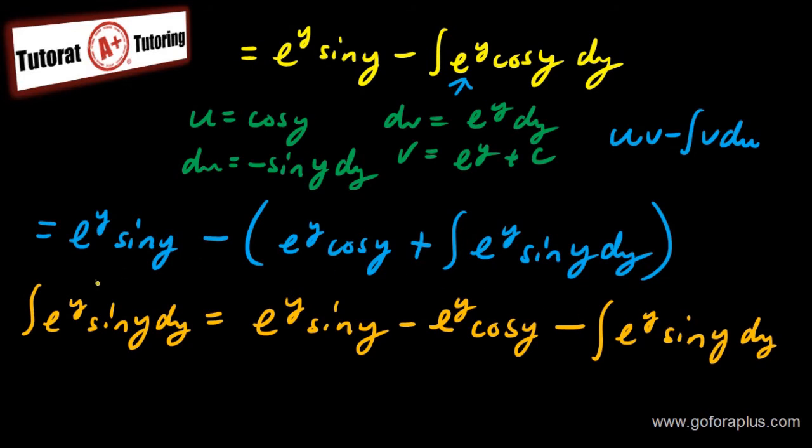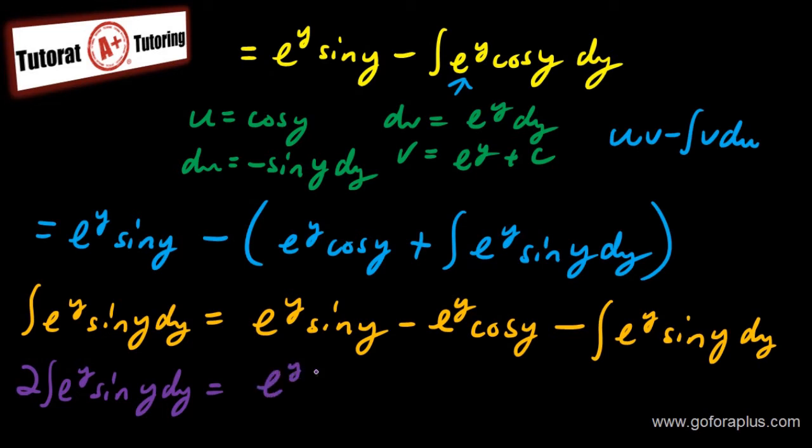Now I can group this term onto the other side to give you two times of that. So two times of integral of e to the y sine of y dy equals e to the y sine of y minus e to the y cos of y plus c. So now I introduce the plus c. So I don't forget about that. Now I know that I have to divide by two so that I can figure out what is the answer for the integral.